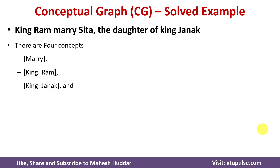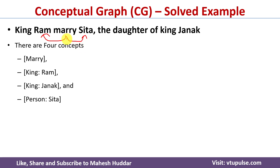The third concept is King Janaka, and the fourth concept is person Sita. King Rama married Sita, so Mary is related to King Rama as well as to Sita. And Sita is the daughter of King Janaka. Hence, Mary is related to King Janaka also. We need to find the conceptual relations between these concepts.